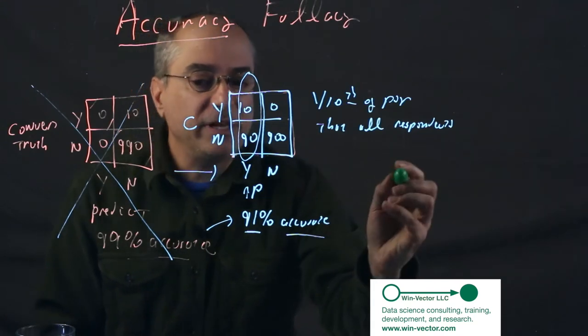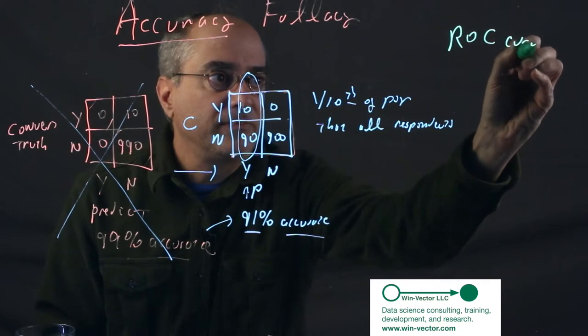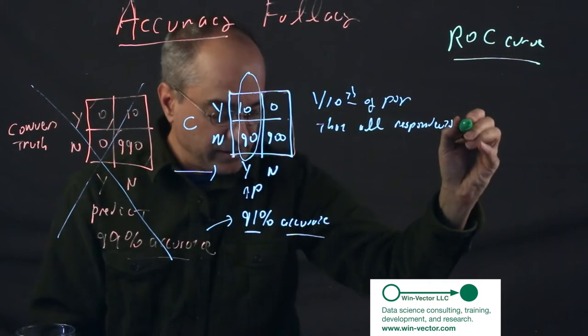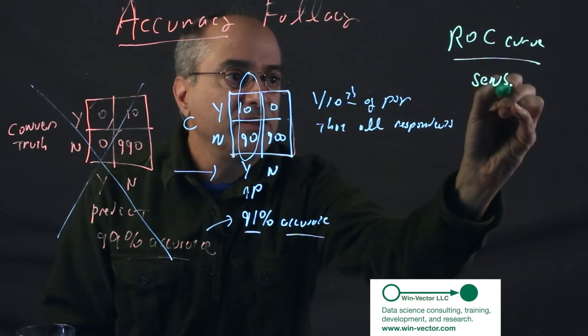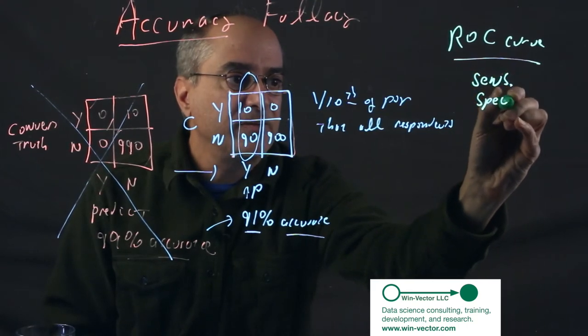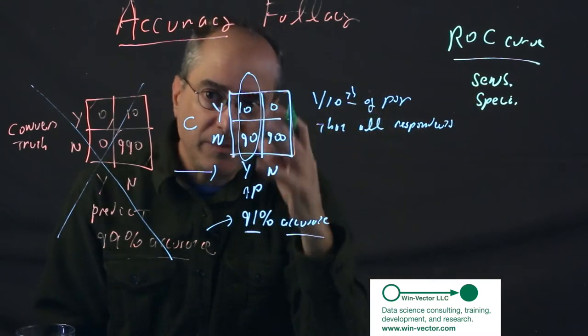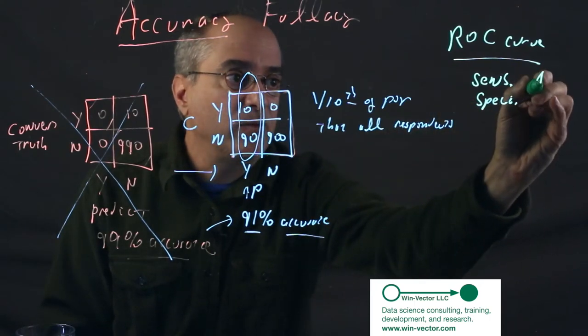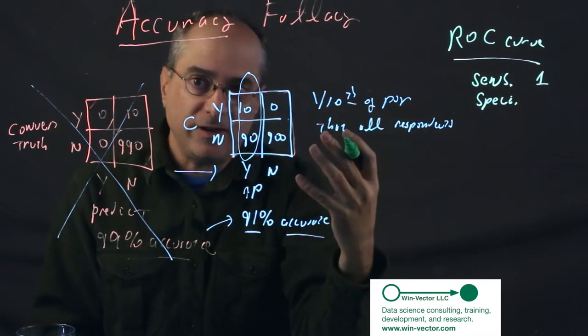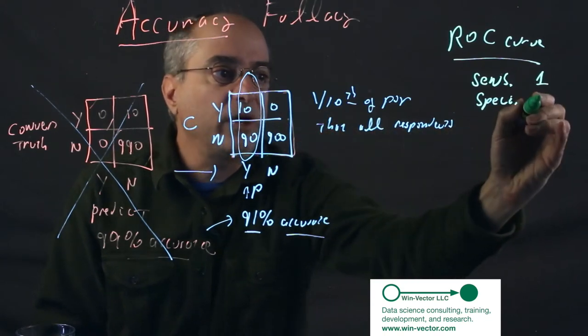I believe you should be insisting on the ROC curve. In particular, you want to know every trade-off of sensitivity and specificity. Sensitivity is what fraction of the people that would have responded did you pick up. So, you want sensitivity at one. Specificity is what fraction of the people that aren't going to respond did you leave alone. So, you also want it near one.